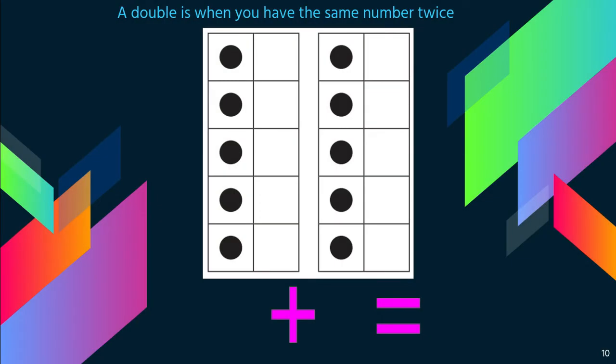So how would we write this as a math problem? Well, I have five in the first 10 frame, and I have five in the second 10 frame. So I would write that as five plus five equals 10. And if I count all the dots I have total, it's 10.